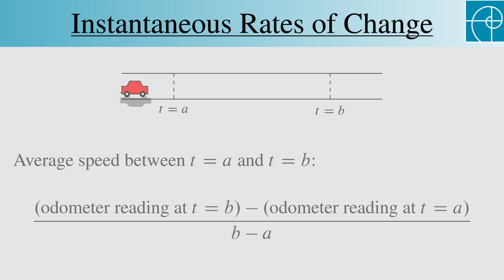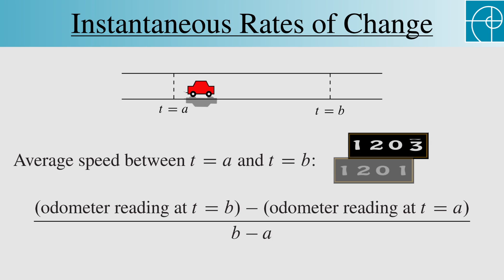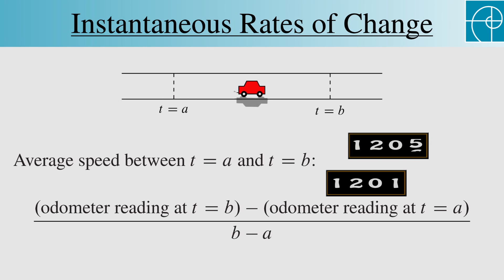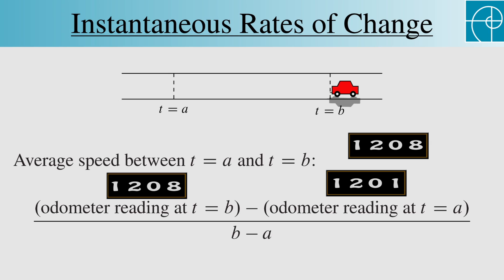To compute an average rate of change, we just need familiar algebra and arithmetic. For example, suppose that you're driving a car on a straight road and you want to determine your average speed between two times a and b. Your average speed is the ratio of the change in distance over the change in time.